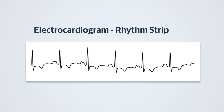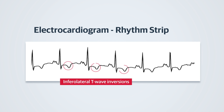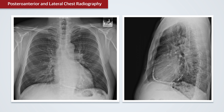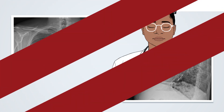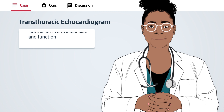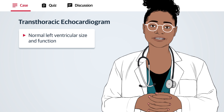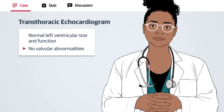An electrocardiogram shows sinus rhythm, rightward axis, and infralateral T-wave inversions. PA and lateral chest X-rays show normal heart size and clear lungs. A transthoracic echocardiogram shows normal left ventricular size and function without valvular abnormalities.